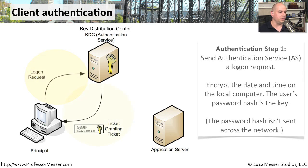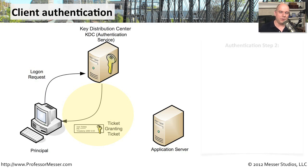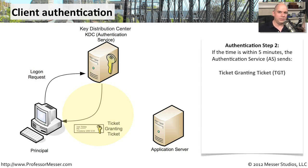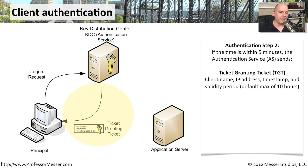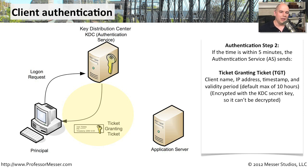Once you send that up to the authentication service, it receives that information and confirms it can decrypt it, because of course you encrypted it with the hash that the authentication service also has. It then provides a ticket granting ticket back to you. This has a client name, your IP address, a timestamp, and the amount of time where that ticket granting ticket will be valid — the default is 10 hours. After 10 hours, this ticket is going to be no good and you'll have to get another one. This is also encrypted with the KDC's special private key, so it can't be decrypted by anyone else.